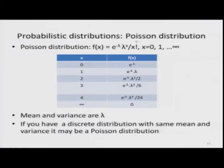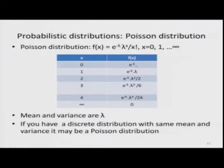Let us take the case of the Poisson distribution. Its algebraic expression is f(x) = e^(−λ) × λ^x / x!, and x takes values from 0 to infinity. The values of f(x) are e^(−λ), e^(−λ)×λ, e^(−λ)×λ²/2, and so on. The mean and variance of this distribution are both equal to lambda. If you have a discrete distribution where the mean and variance are the same, it may be a Poisson distribution.